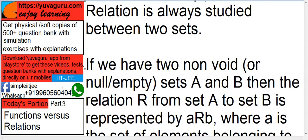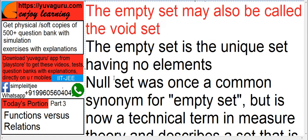Relation is always studied between two sets. Now, if we have two non-void, null or non-empty sets. Now, we will understand this non-void means what? Firstly, what is a void set?